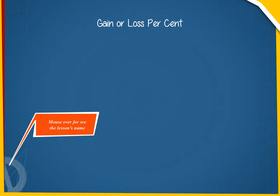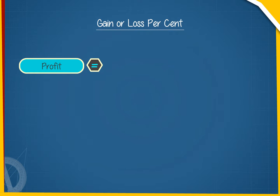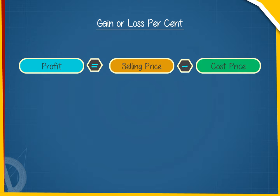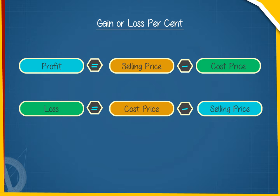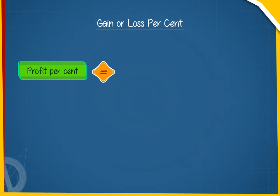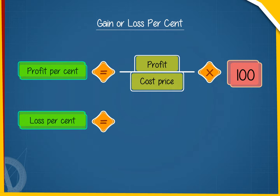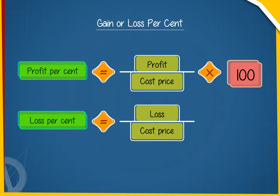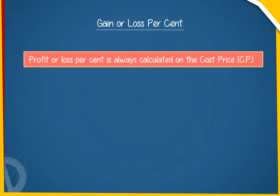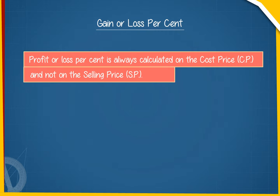Gain or loss: profit equals selling price minus cost price; loss equals cost price minus selling price. Profit percent equals profit upon cost price into 100; loss percent equals loss upon cost price into 100. Note that profit or loss percent is always calculated on the cost price (CP) and not on the selling price (SP).